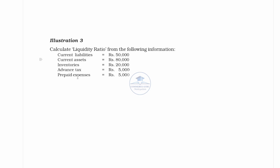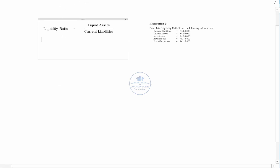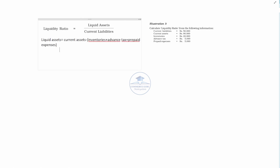We will discuss the liquidity ratios. The formula is liquid assets divided by current liabilities. You will consider that the items to be excluded are advance taxes and prepaid expenses to determine the liquid assets.